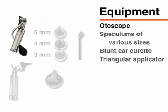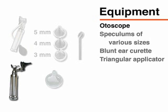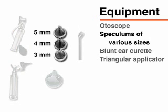For pneumatic otoscopy, you will need an otoscope with a diagnostic head that has an attached rubber bulb and a movable lens. Cerumen removal is most readily accomplished using an otoscope with a surgical head, but a diagnostic head may also be used. You should use the largest otoscopic speculum that fits comfortably into the external auditory canal; for very large canals, soft tip speculums may be needed.